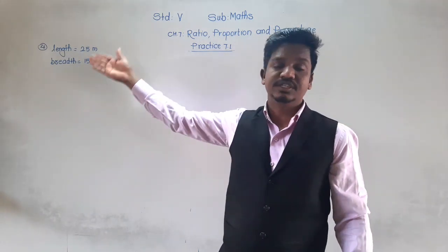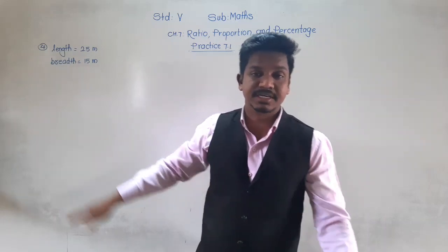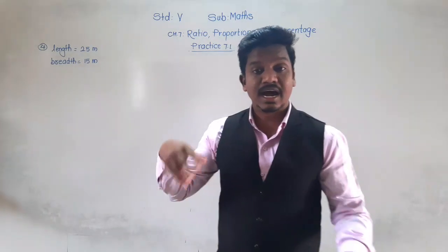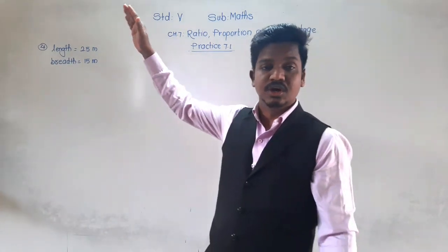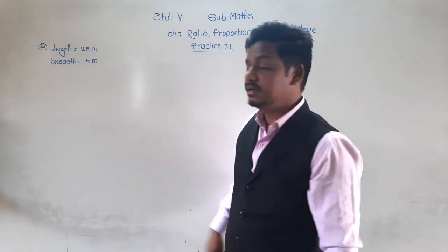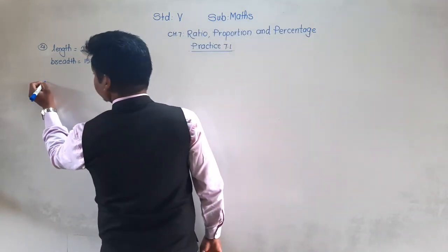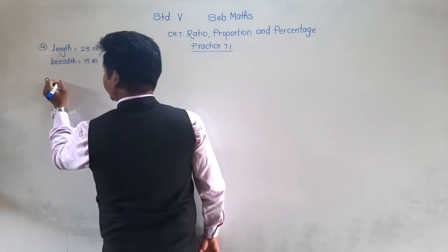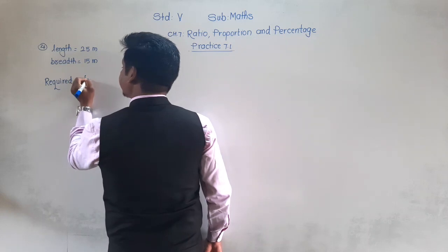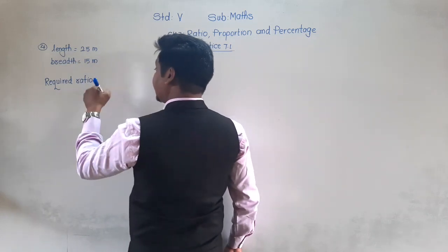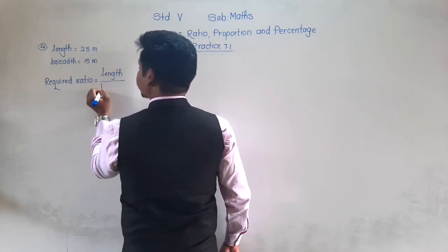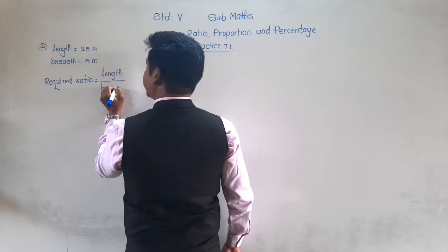Which number should be the numerator and which should be the denominator? That will be determined by the question. They have asked: find the ratio of length and breadth — so length will come in the numerator and breadth in the denominator. This is the ratio we require.